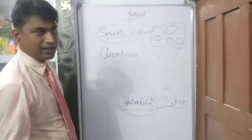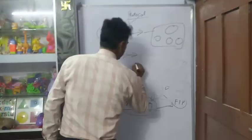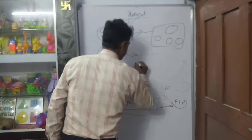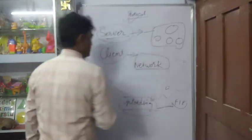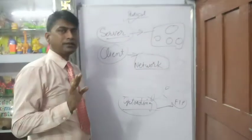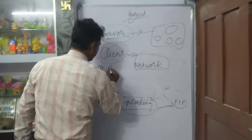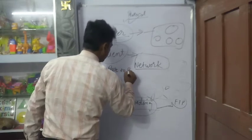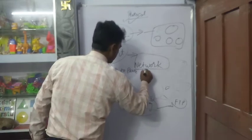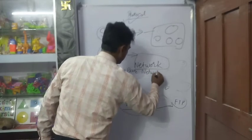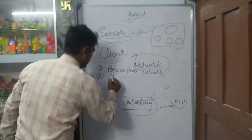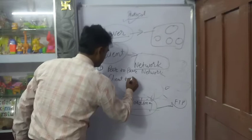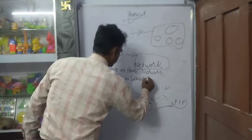Next topic - Category of Network. Two types category defined in computer network. Number one - Peer to peer network. Number two - Client server network.